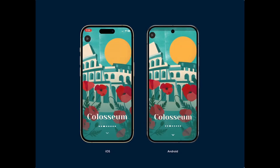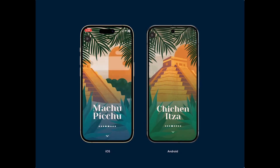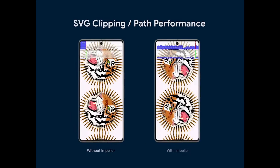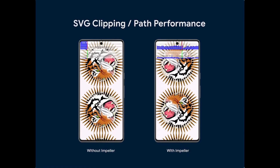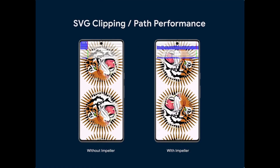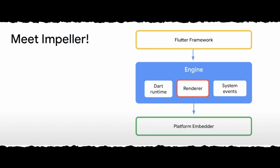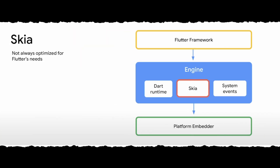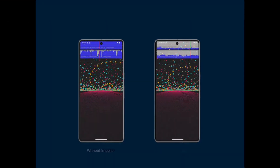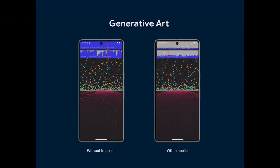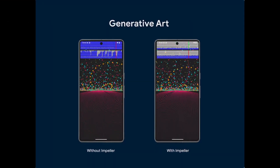First up is the big one: Impeller is now the default rendering engine on modern Android devices. Impeller replaces Skia on Android to deliver consistent, predictable performance. With this update, complex animations and UI effects can run faster and smoother, and developers get fewer headaches.